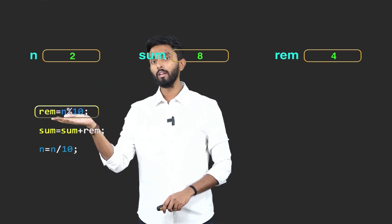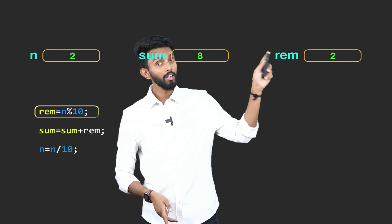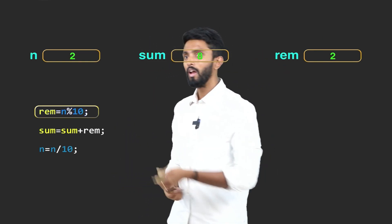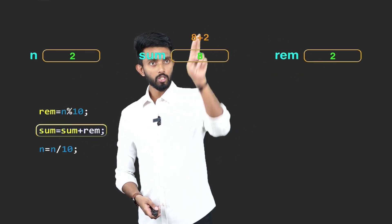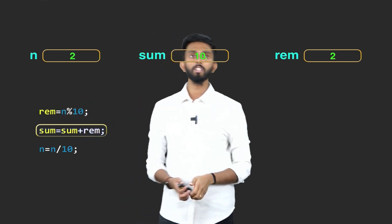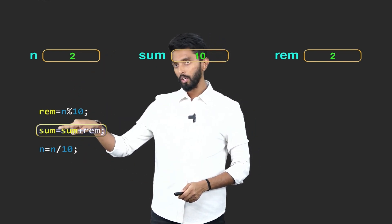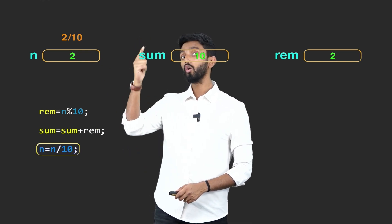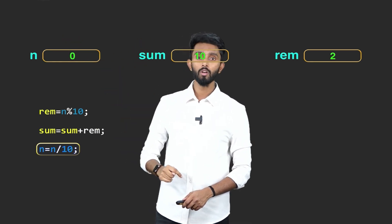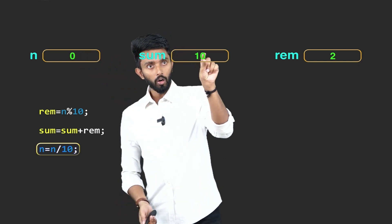Again, do the same thing. n modulo 10: 2 modulo 10 — what will be the remainder? Remainder is going to be 2. Take that, give it to remainder. Next, take sum, take remainder, add them together: 8 plus 2 is 10. Give that 10 back to sum — sum gets 10. Next, come down and remove this 2: n divided by 10, which is 2 divided by 10. The quotient is going to be 0 — and that is what I give to n. n became 0, and you've already got the sum.